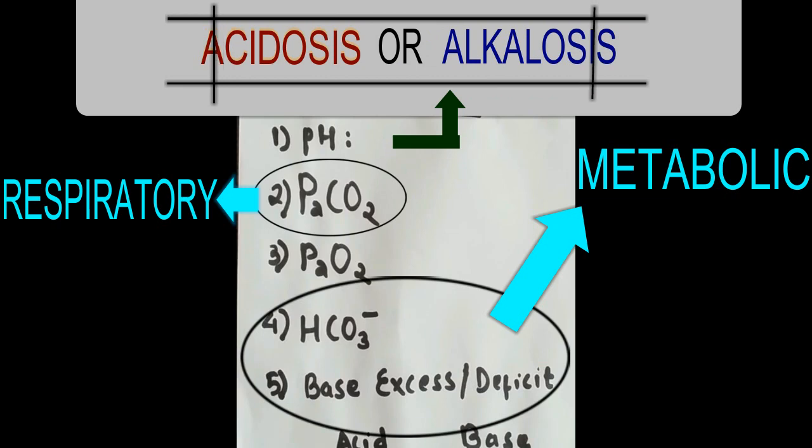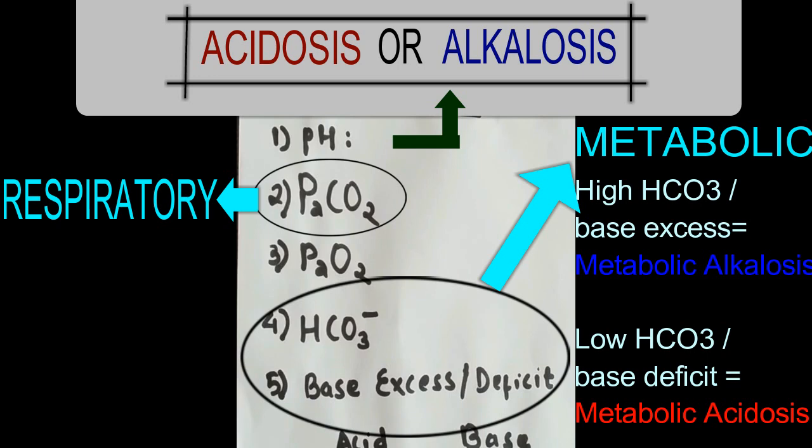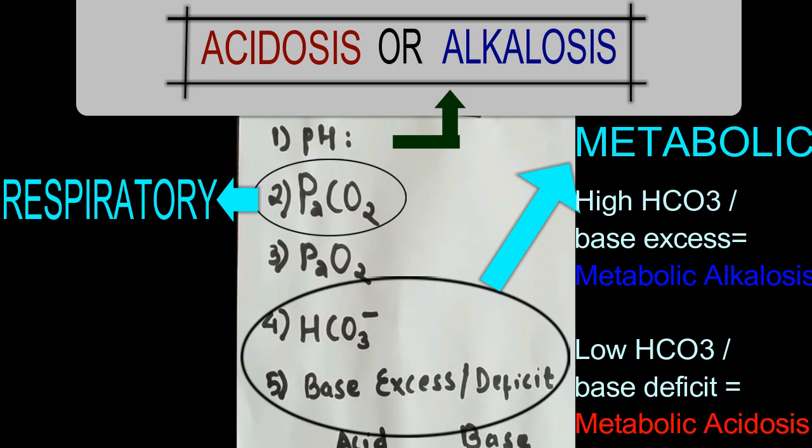Bicarbonate is the metabolic component. It is the base contributing largely to base excess. Increase in bicarbonate or base excess from its normal range causes metabolic alkalosis and decrease in bicarbonate or base deficit from its normal range causes metabolic acidosis.